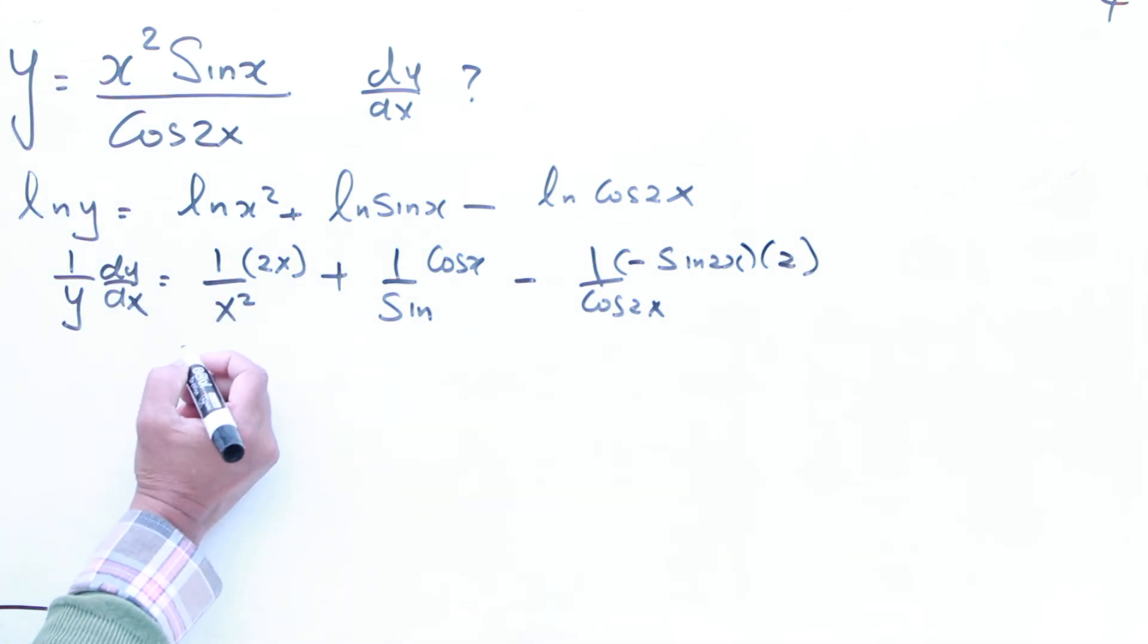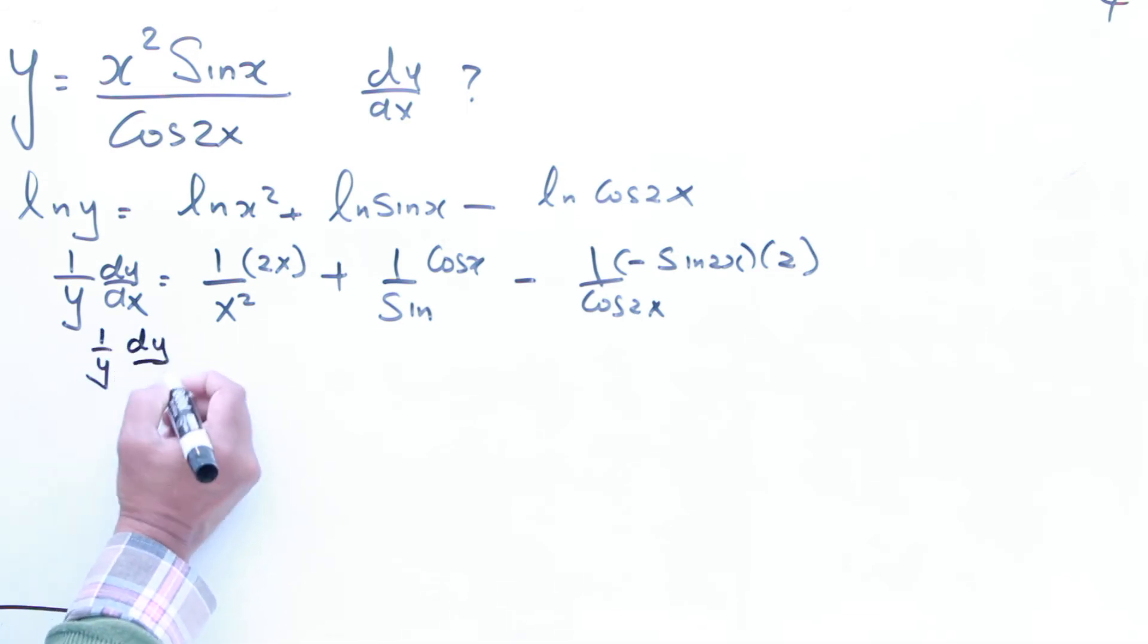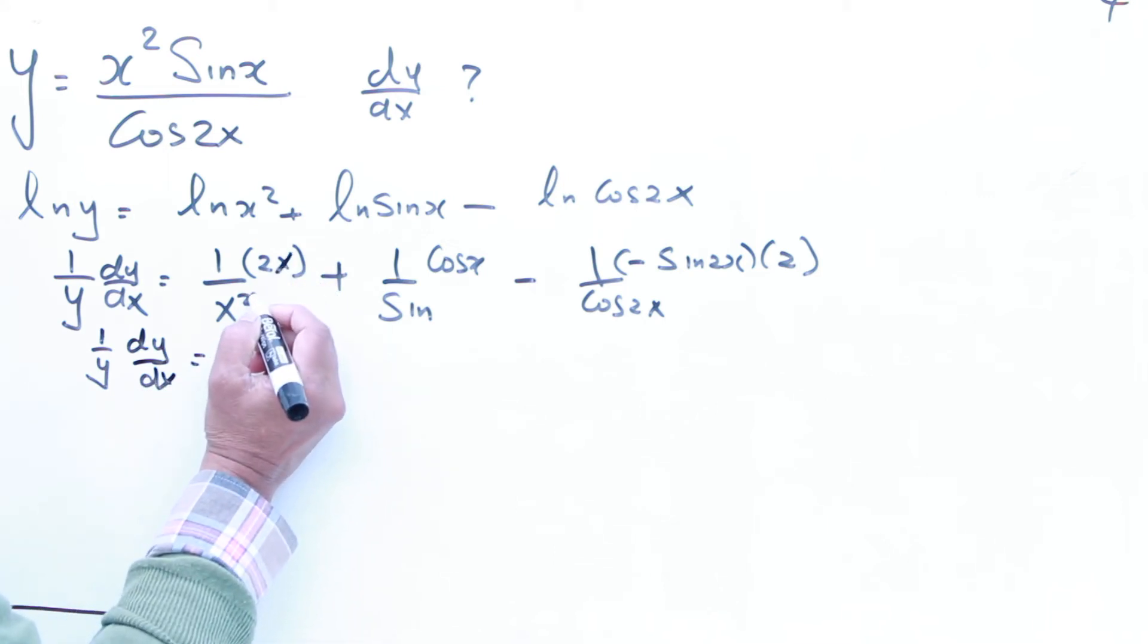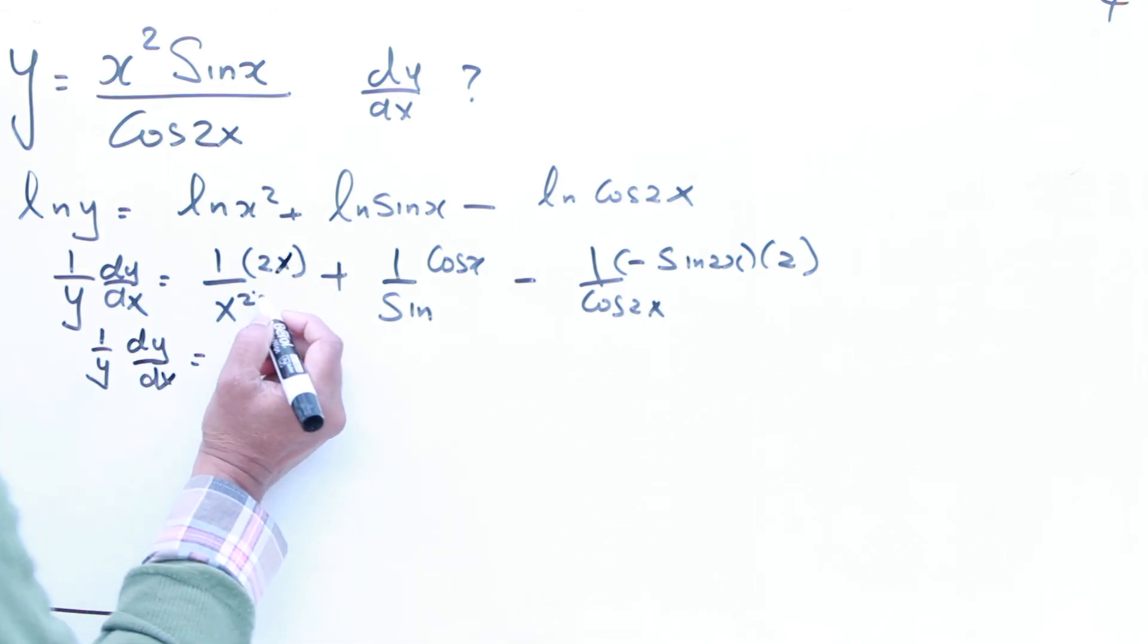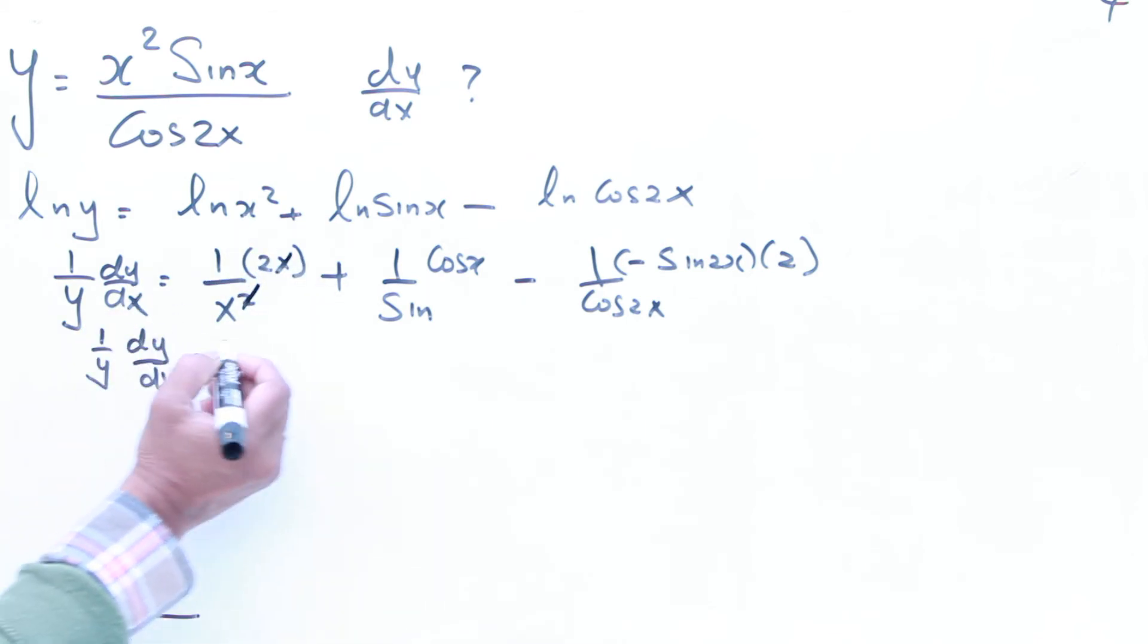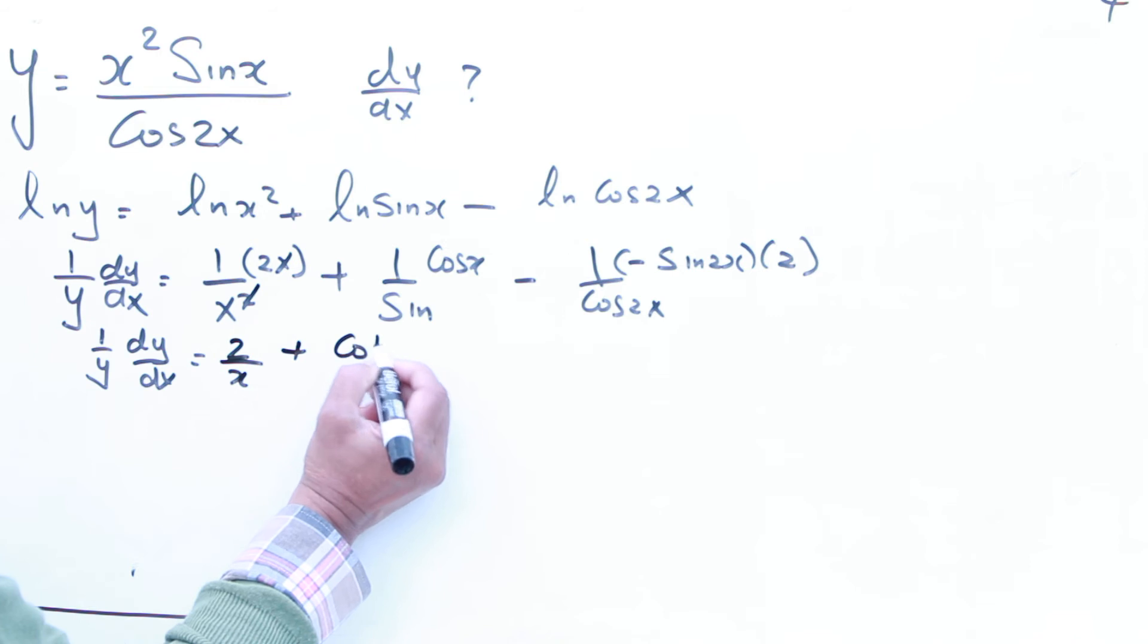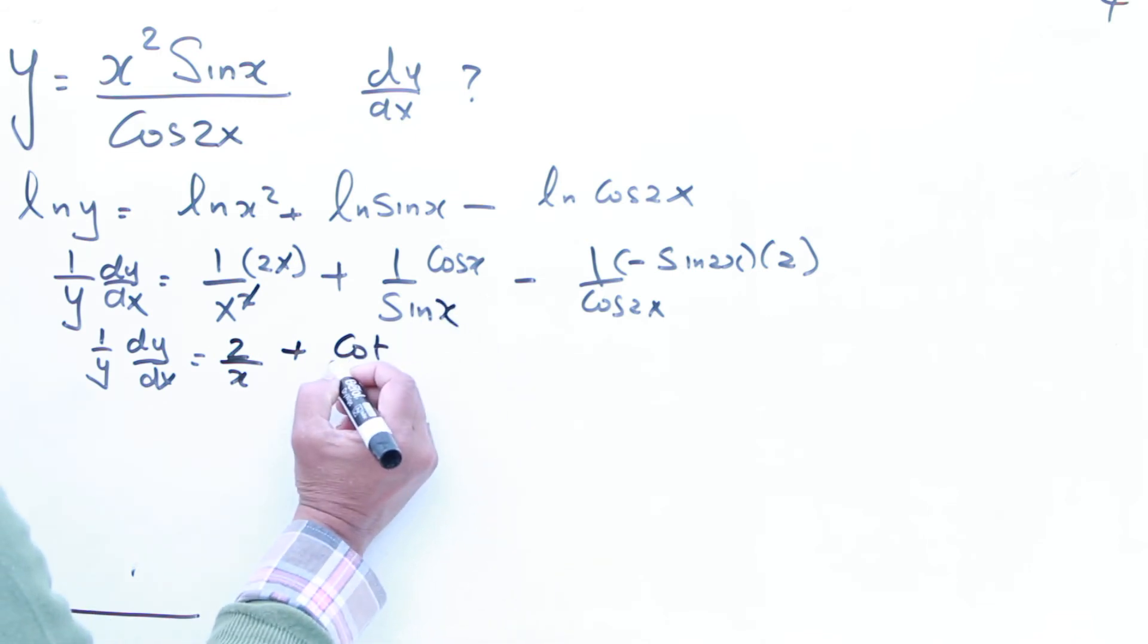So if you do that, now we have this one, I can simplify that. 1 over y dy over dx equal to, this one cancels this one. So that one cancels that one. So that answer is going to be simply 2 over x, plus, that one is equal to cos x over sin x, that is going to be cot x.